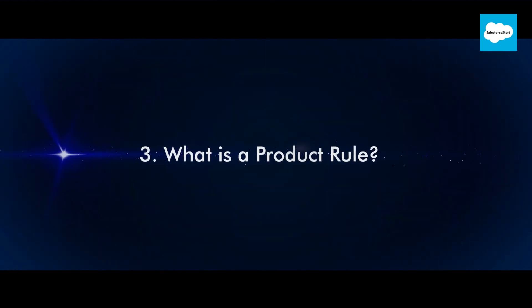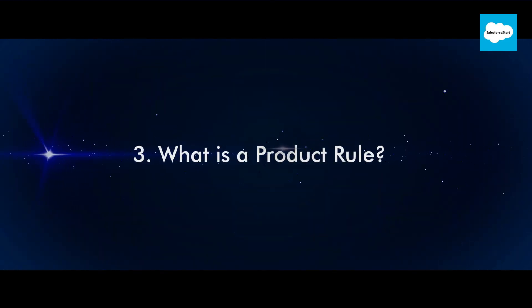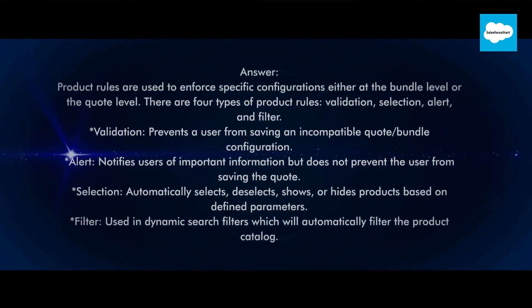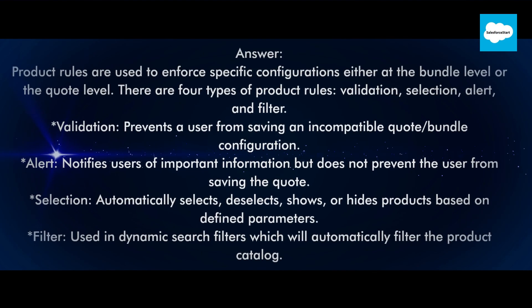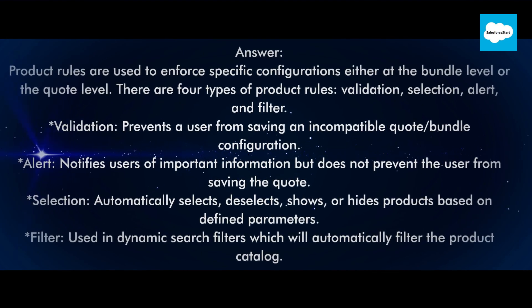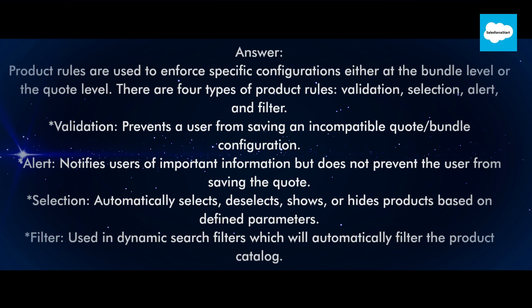Question 3: What is a product rule? Product rules are used to enforce specific configurations either at the bundle level or the quote level. There are four types of product rules: validation, selection, alert, and filter.